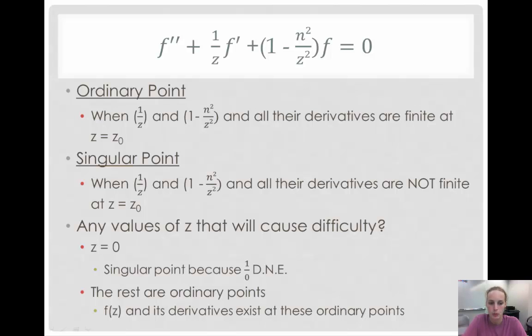But, a singular point is when one over z and one minus n squared over z squared and all of their derivatives are not finite at some point z equals z sub zero. Are there any values that will cause some difficulty? z equals zero will be one because one over zero does not exist. For this Bessel equation, the rest of them are ordinary points because f of z and its derivatives exist at all of these points.